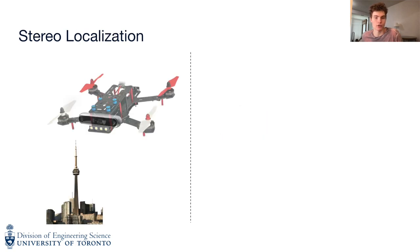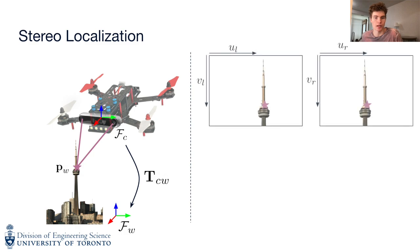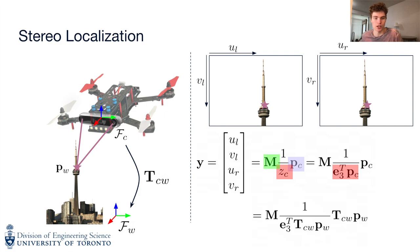Stereo localization determines a robot's pose using stereo camera measurements of known landmarks. For a single landmark, the camera measures pixel locations in the left and right images. The measurement model involves the landmark positions in the camera frame, the landmark depth, and the camera's intrinsic parameter matrix. Landmark depth is the third element of p sub c. The landmark position in the world p sub w is known, but the position in the camera frame requires estimating the unknown transformation matrix T sub cw.